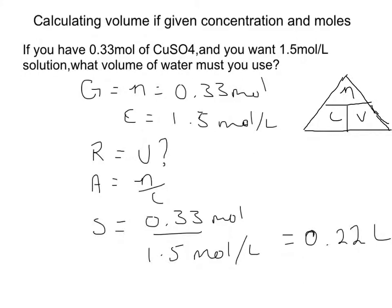Today we are calculating the volume of water. If you have 0.33 mol of copper sulfate, then you want a 1.5 mol per liter solution.